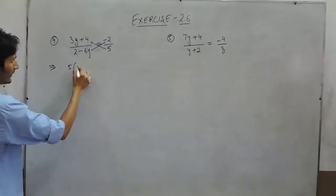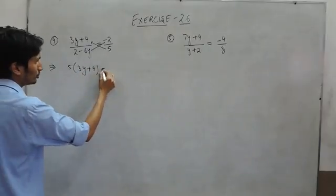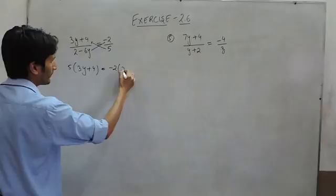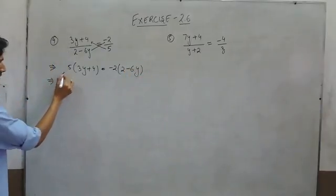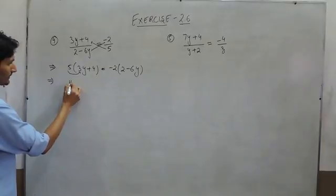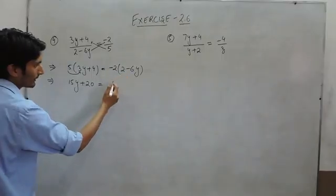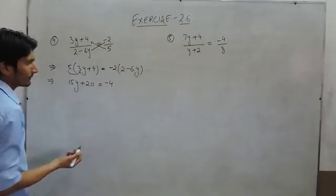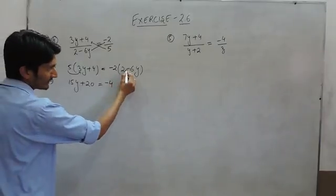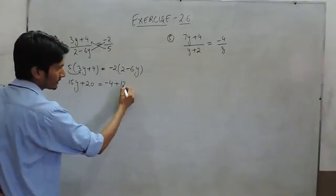So when 5 is multiplied by this term and minus 2 is multiplied by this expression — this multiplied by 3 will give 15y and this will give 20. Minus 2 when multiplied by 2 will give 4, and because this is carrying a positive sign, this will become negative. And this is negative, so this will become positive, and 2 when multiplied by 6 is 12y.